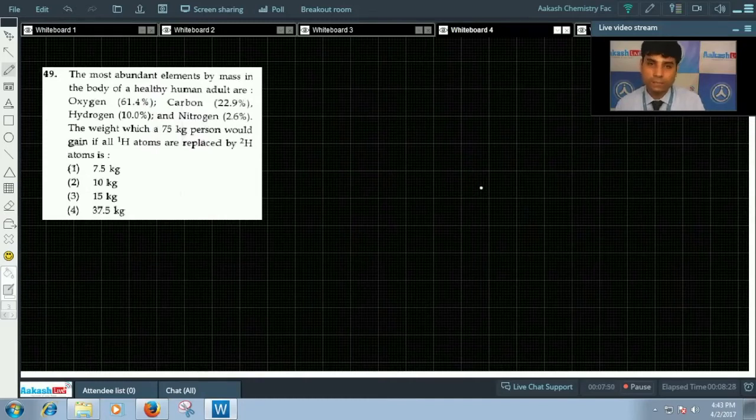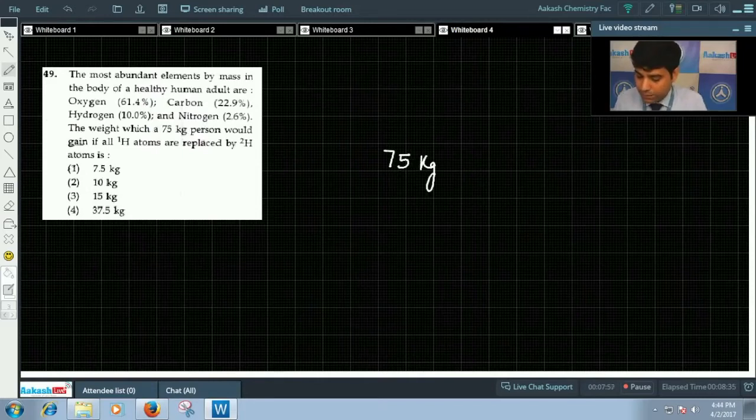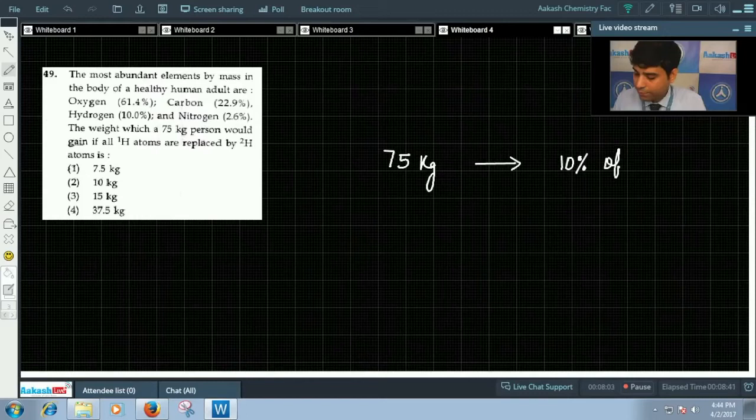As we can see, hydrogen is 10 percent, so 75 kg person will have mass of hydrogen 10 percent of 75 kg, that is equals to 7.5 kg.